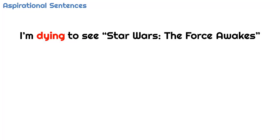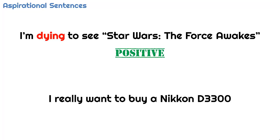Aspirational sentences can express sentiment too. 'I'm dying to see Star Wars: The Force Awakens.' This is actually a positive statement, even though it contains the negative sentiment word 'dying.' It shows that the author aspires to see this new movie, so it's positive. 'I really want to buy a Nikon D3300.' Here's a positive statement about buying a camera — the person really wants to purchase this camera, so their aspiration is positive, even though it doesn't contain a positive sentiment word.